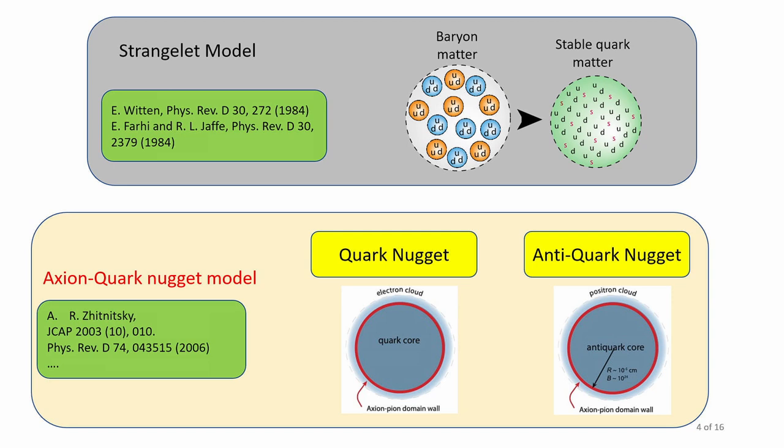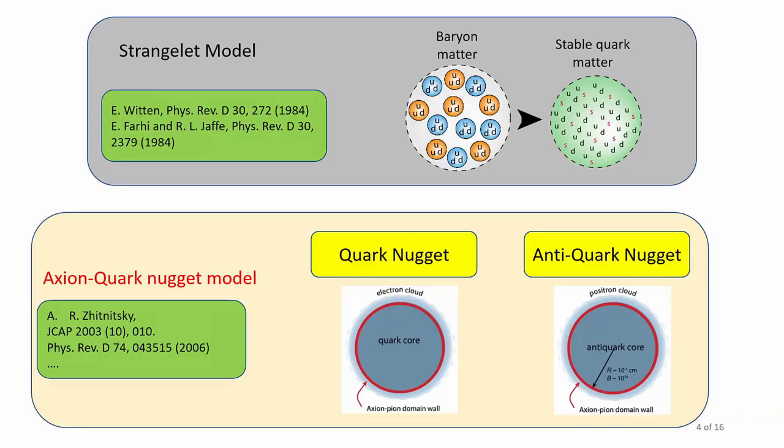What Zhitnitsky did, he added two more assumptions on top of this assumption about quark matter. The first one is that anti-quark nuggets may be present. This assumption is fair enough because if quark nuggets may consist of quarks, it's natural to assume that anti-matter may be represented by anti-quark nuggets. The second assumption, the second ingredient here is the so-called axion domain wall.